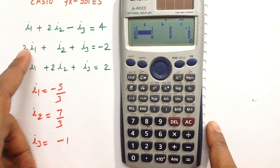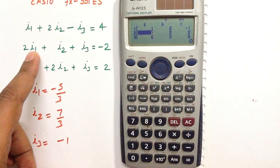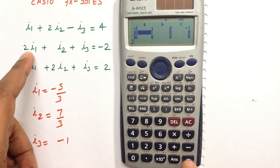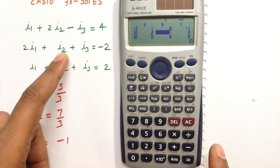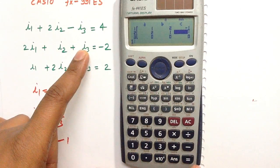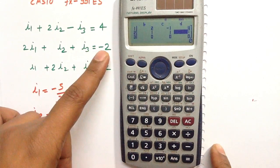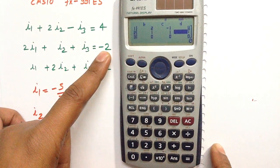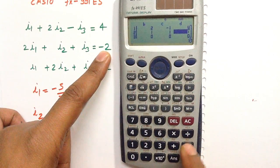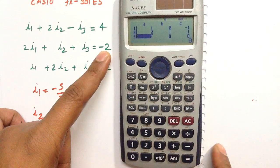Now coming to the second equation, the coefficient of I1 is 2, which is the value of A, so press 2 then equals. Coefficient of I2 is 1, press equals. Coefficient of I3 is 1, press equals. The constant appearing on the right hand side of equation 2 is minus 2. So press minus 2 then equals to feed this value.